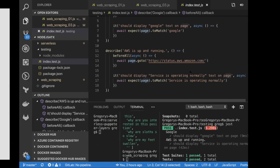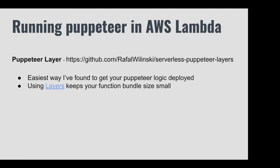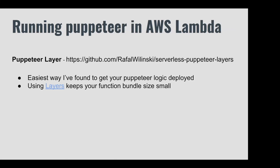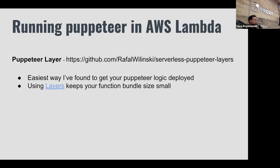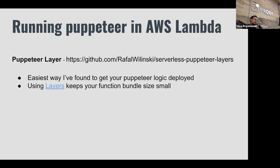The last thing we'll get into is running Puppeteer serverlessly, specifically in AWS Lambda. There are a number of different ways to do this. People have put Puppeteer in Docker — that works generally but has some complexities. I like this particular library because it makes use of a new AWS Lambda capability called Layers. If you haven't looked into it, check it out — it allows you to take big files and make them available to your Lambda function. Anyone who's worked with Lambda knows there are hard limits on function size, and Layers really opens up the door to using larger binaries.